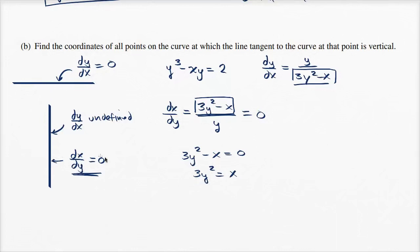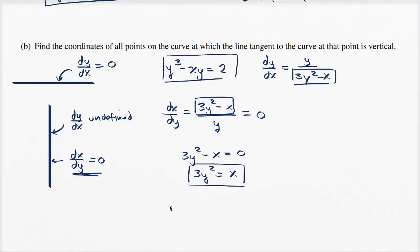For that to be true, x must equal 3y². And of course, the (x, y) pair must also satisfy the equation of the curve. So let's use both constraints to solve for x and y. The easiest approach is to substitute x = 3y² into the original curve equation.